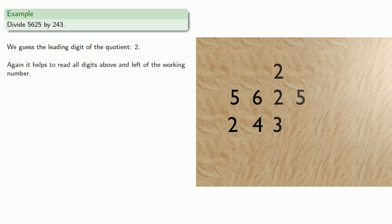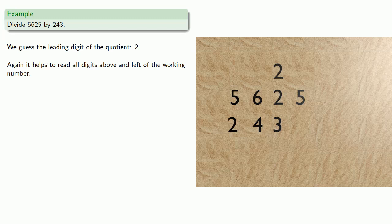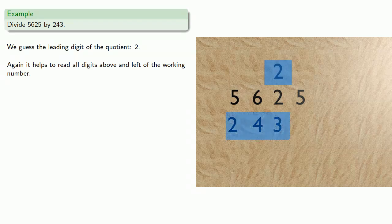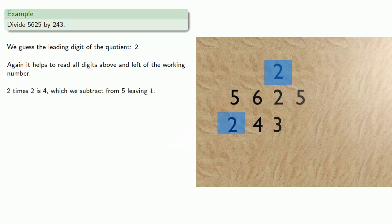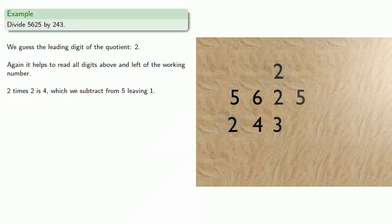And again, it helps to read all the digits above and left of the working number. So when we were multiplying, this 2 would have been multiplied by each of the digits and added to the partial product. So now we'll multiply this 2 by each of the digits in the divisor and subtract it from our dividend. So 2 times 2 is 4, which we subtract from 5, leaving 1.